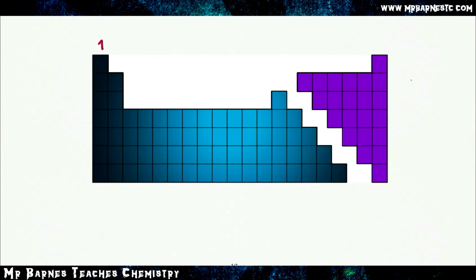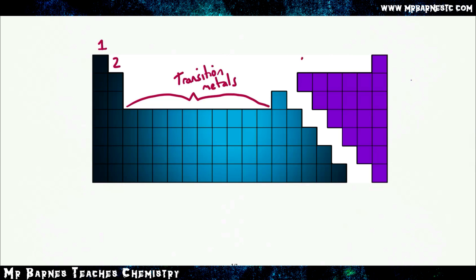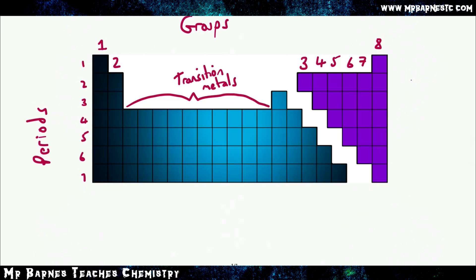If we start off with a quick recap, you should remember the groups go down from the top, so group one and group two are over on the left here. The transition metals are the block in the middle, and then you've got group three, four, five, six, seven, and either eight or zero on the right. Don't forget that the periods are the rows going across.